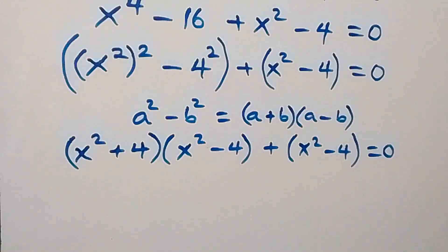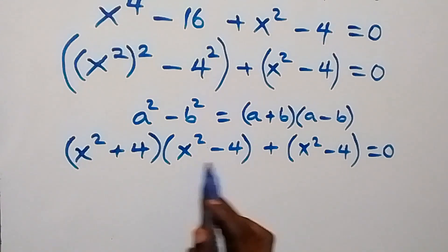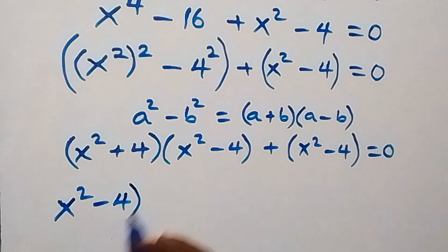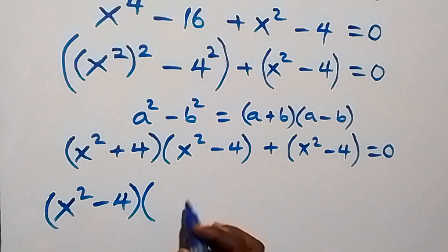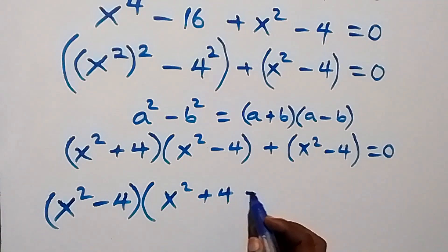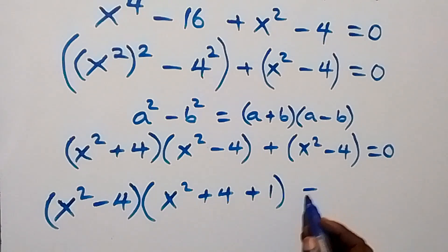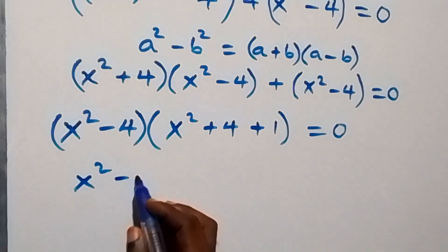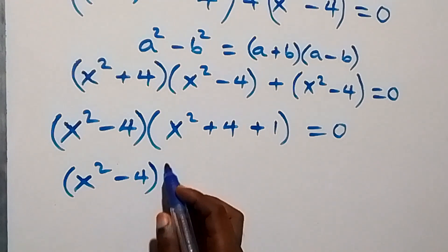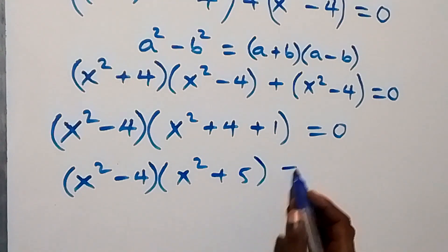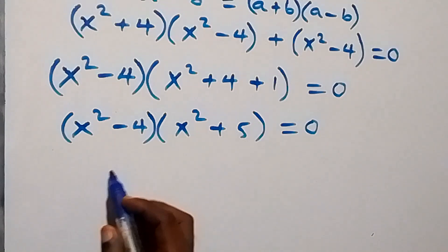You are watching my Starting Math Class. If you are enjoying this class please give a thumbs up and subscribe to my channel. Now we have x squared minus 4 — let's factor it out. We have x squared minus 4 times what is left: x squared plus 4 plus 1, giving x squared minus 4 times x squared plus 5 equals zero.